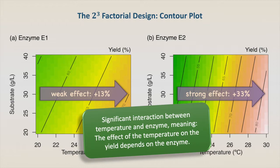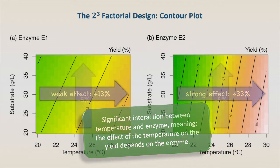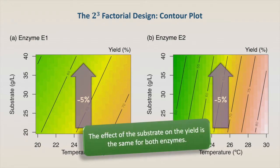The effect of the temperature on the yield depends on the enzyme type. For substrate, the increase in substrate concentration from 20 to 40 grams per liter causes an average decrease of 5% on the yield. The effect of the substrate concentration is the same for both enzymes.